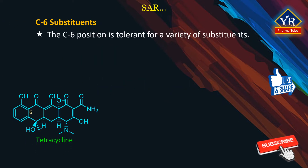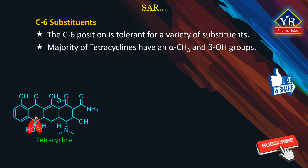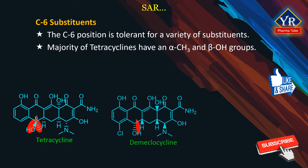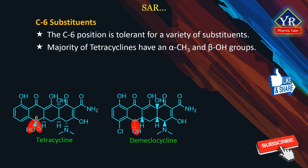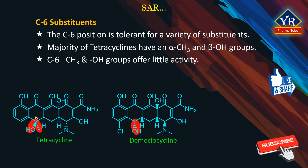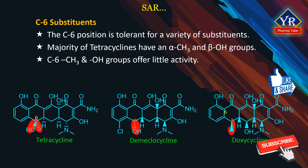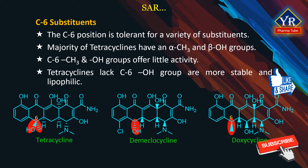C6 substituents. The C6 position is tolerant for a variety of substituents. The majority of tetracyclines have an alpha methyl group and a beta hydroxyl group at this position. Demeclocycline is a naturally occurring C6 demethylated chlorotetracycline with excellent activity. Thus, the C6 methyl group contributes little to activity of the tetracycline family as a whole, although its presence does increase lipophilicity somewhat. Similarly, the C6 hydroxyl group also appears to offer little in terms of antibacterial activity. Removal of this group affords doxycycline, which is a superb antibacterial agent. Tetracyclines that lack a C6 hydroxyl group possess some advantages in that these compounds are generally more stable and more lipophilic in nature.